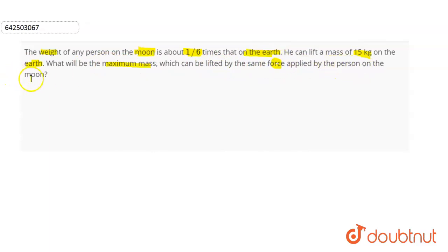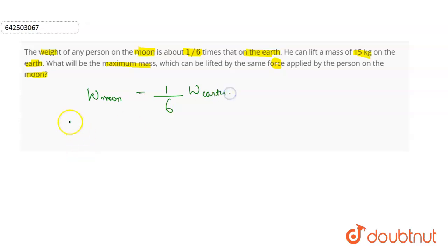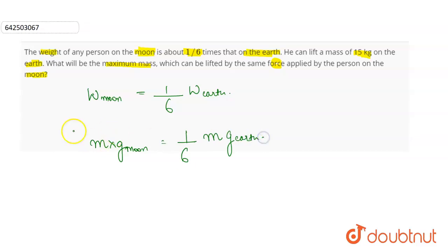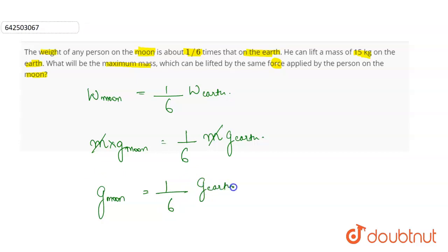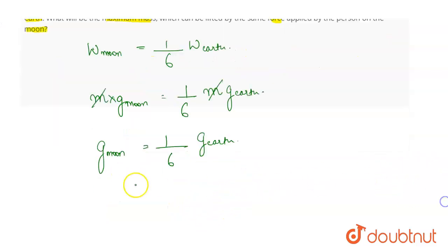Firstly, we know — and it is also given to us — that weight on moon is equal to 1/6 times weight on Earth. Since weight is m × g, and mass m remains the same, this means g on moon is equal to 1/6 times g on Earth. Here g is the acceleration due to gravity.